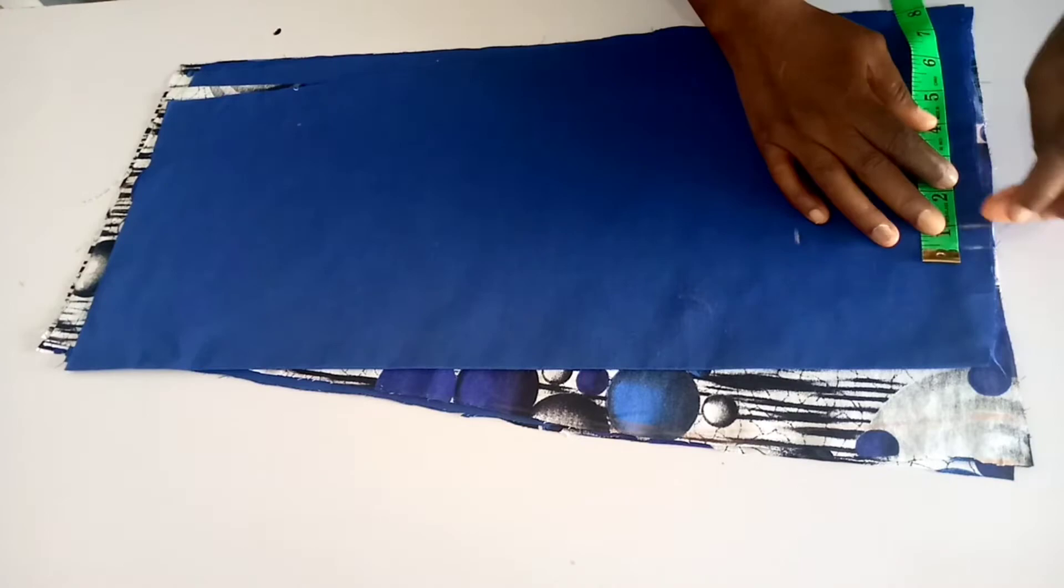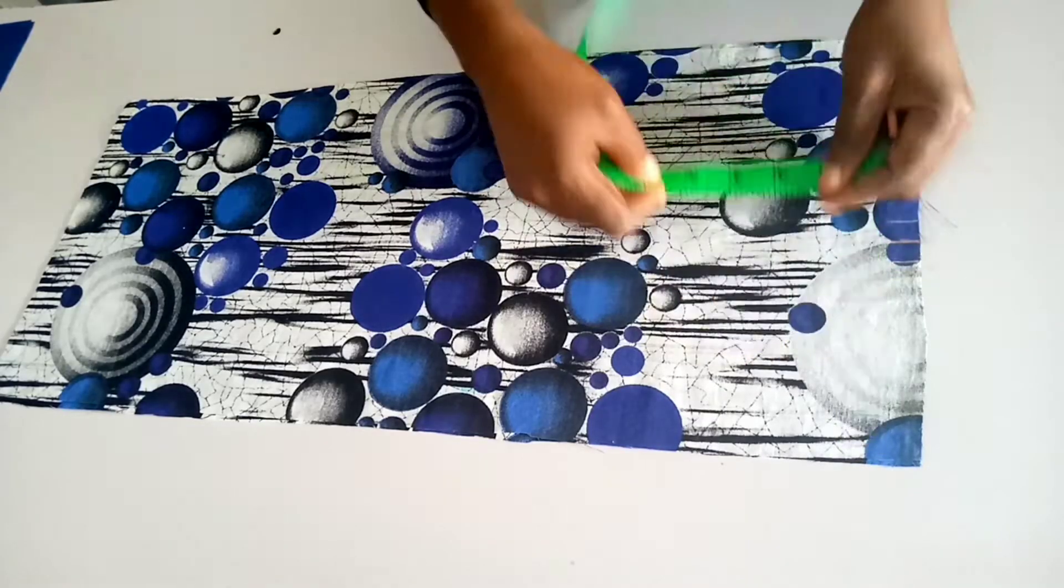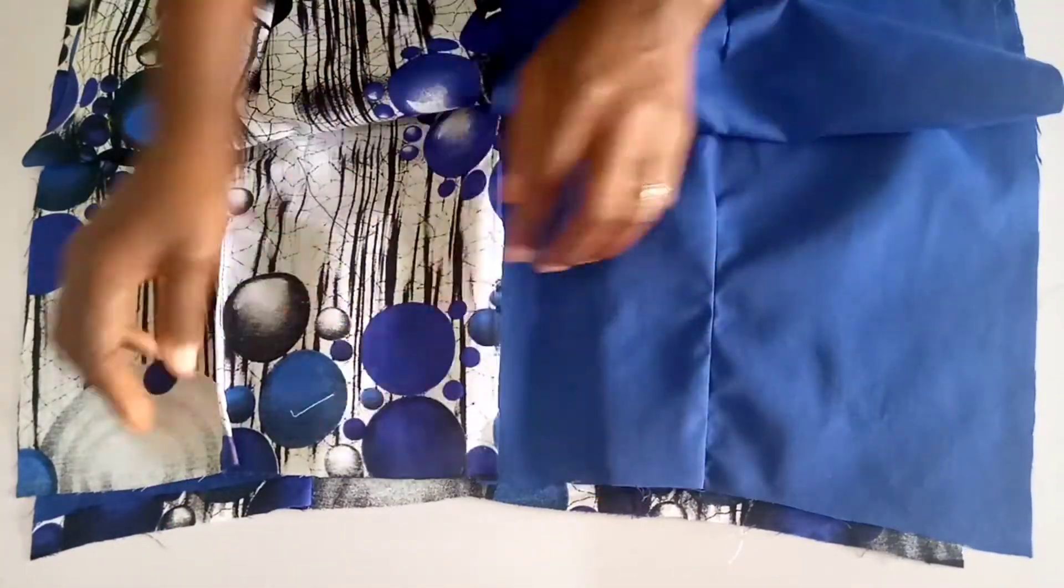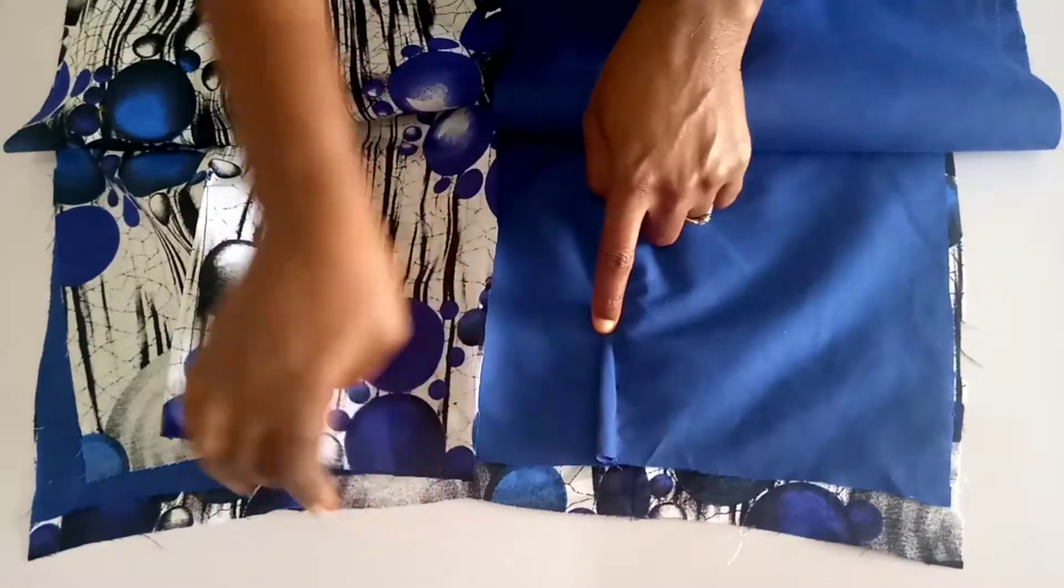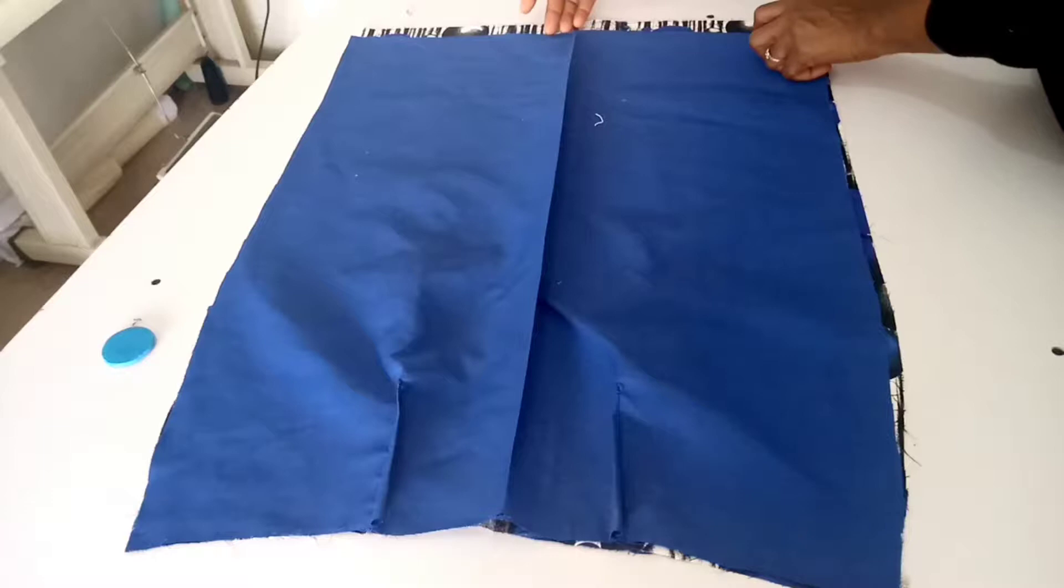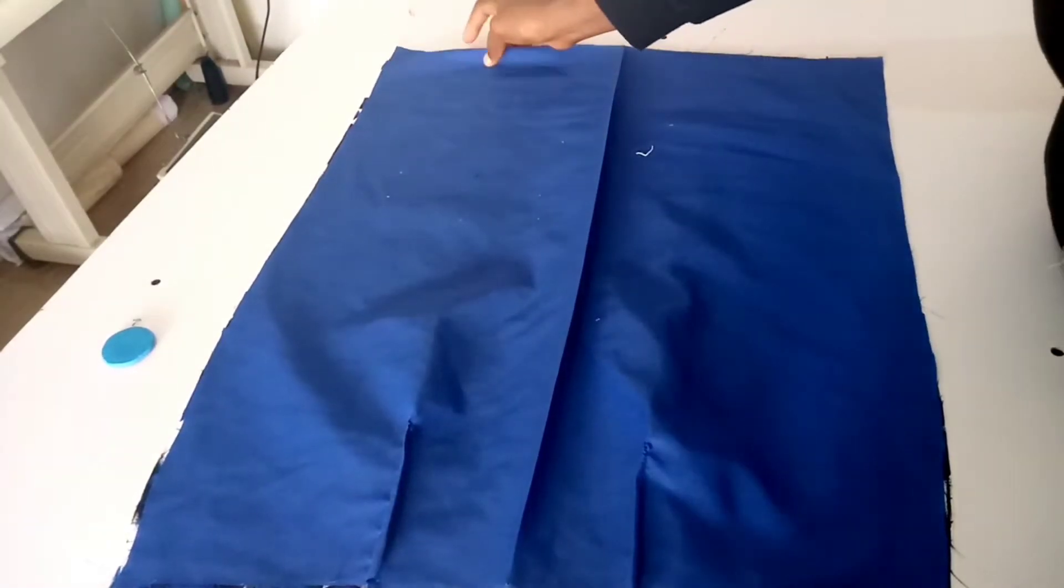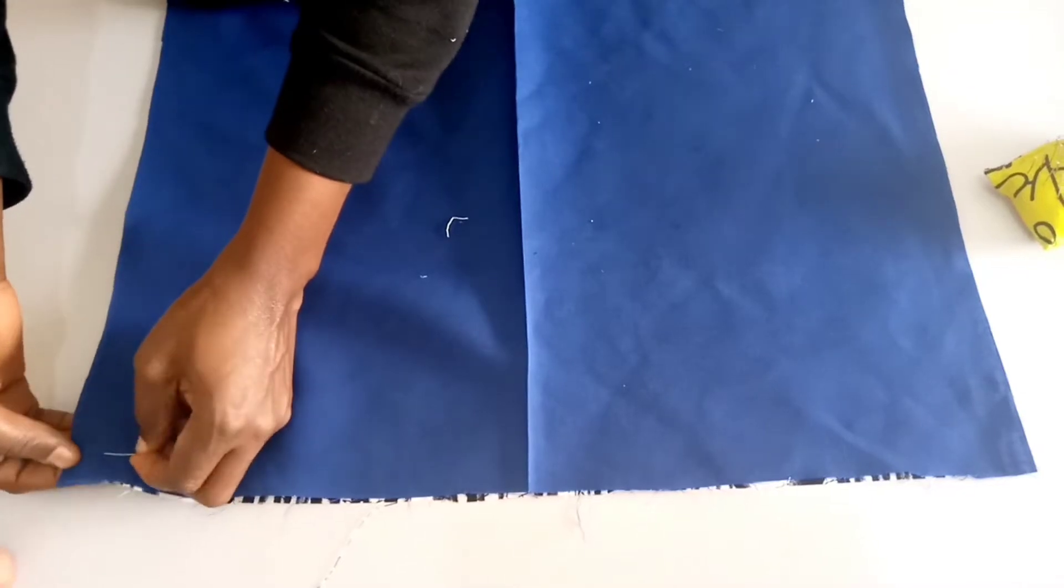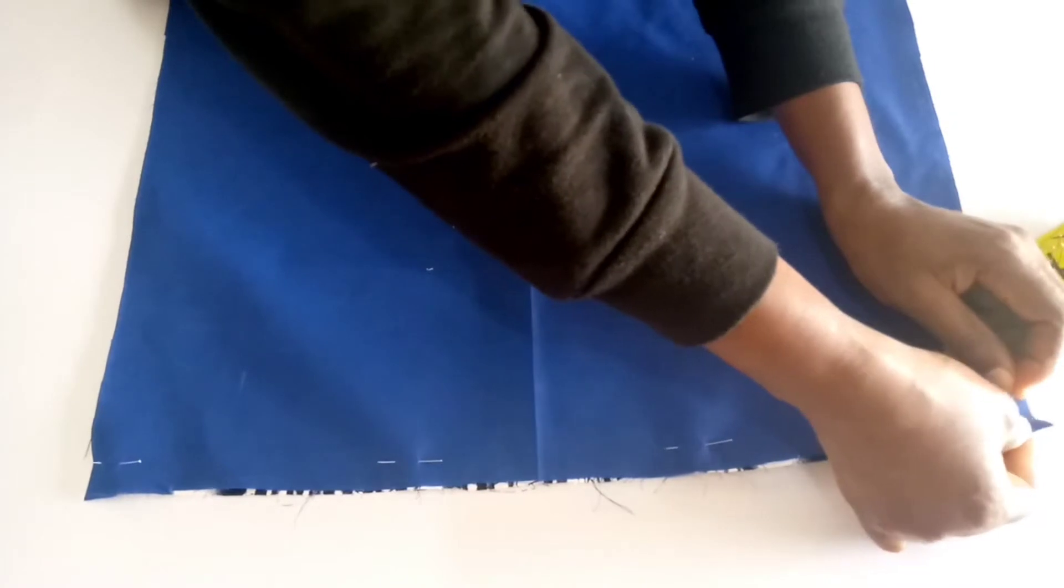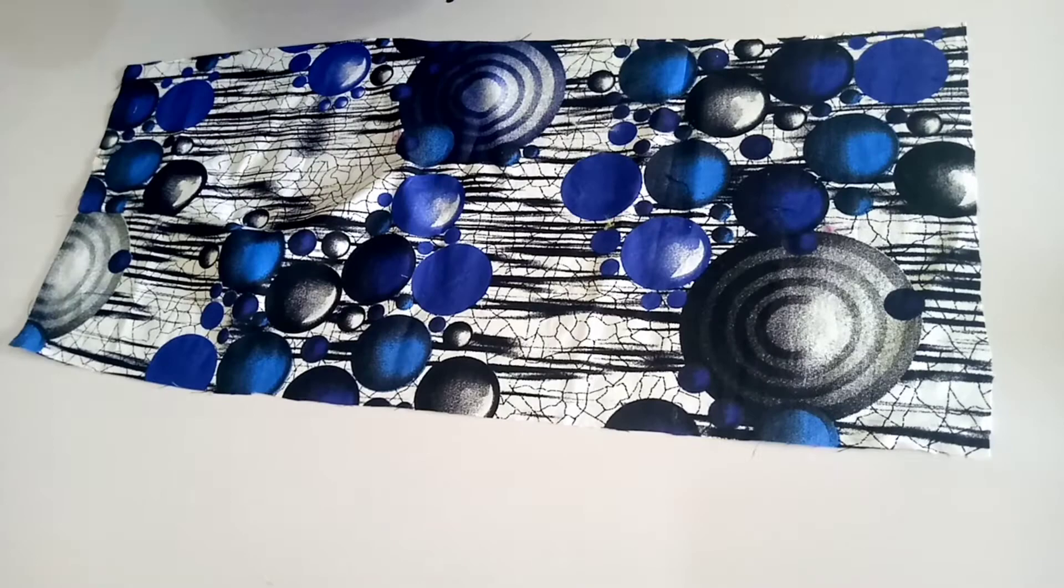Ensure you mark on the lining and the fabric. We've sewn the darts, you can see this is what the sewn darts look like. Next, we are going to pull the lining to the base and sew with 0.5 inch after pinning. Do the same to the front and the back of the skirt.